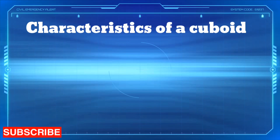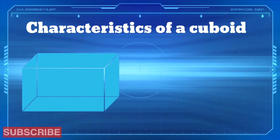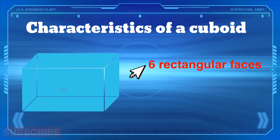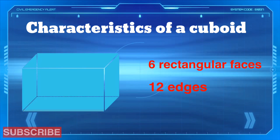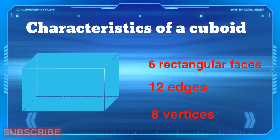Characteristics of a cuboid. A cuboid has six rectangular faces, twelve edges, and eight vertices.